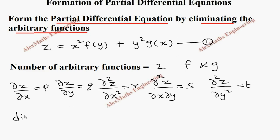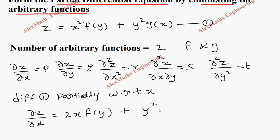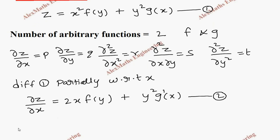Let's take the first expression and differentiate it partially with respect to x. This gives dou z by dou x equal to: f of y is constant (since y terms are constant when differentiating w.r.t. x), so the derivative of x square is 2x and the constant f of y is written as it is. Similarly, g of x derivative is g dash of x. Let's keep this as the second expression.